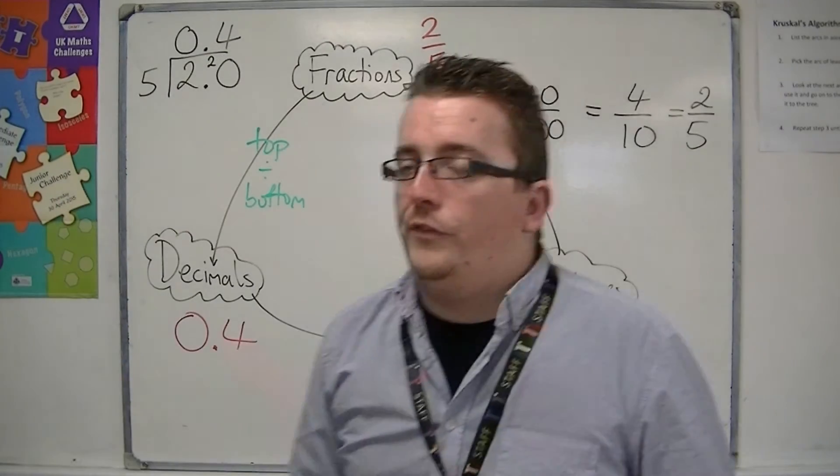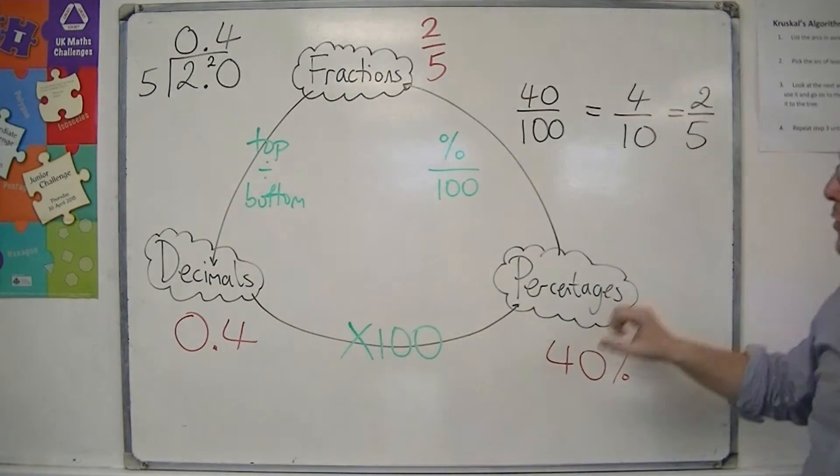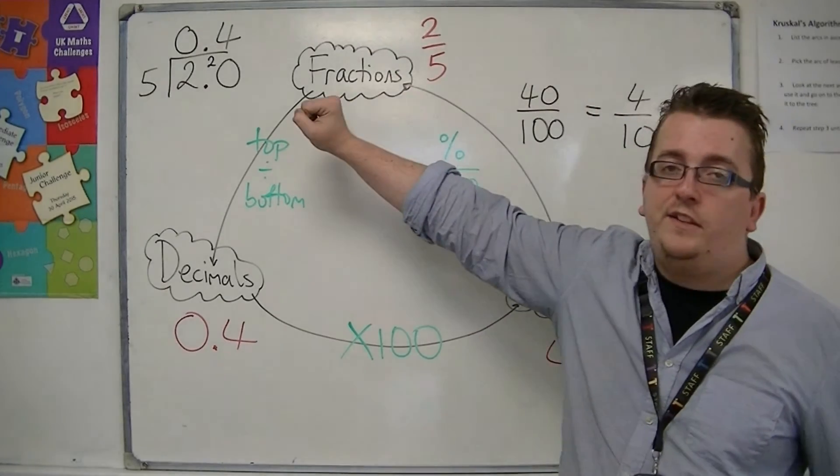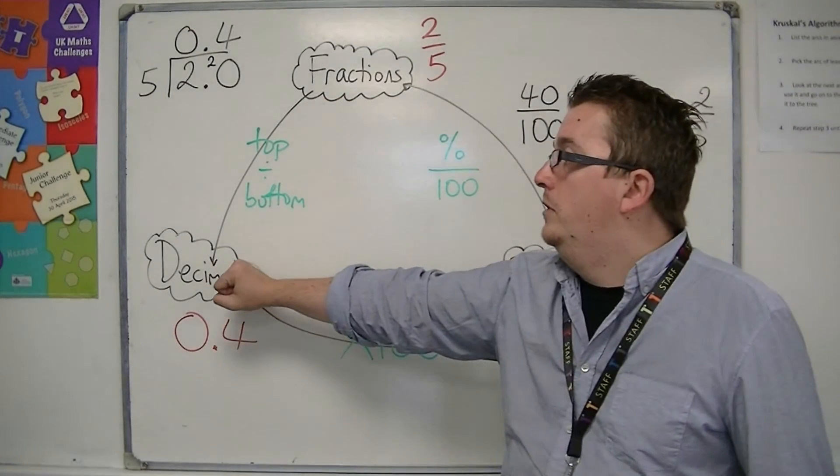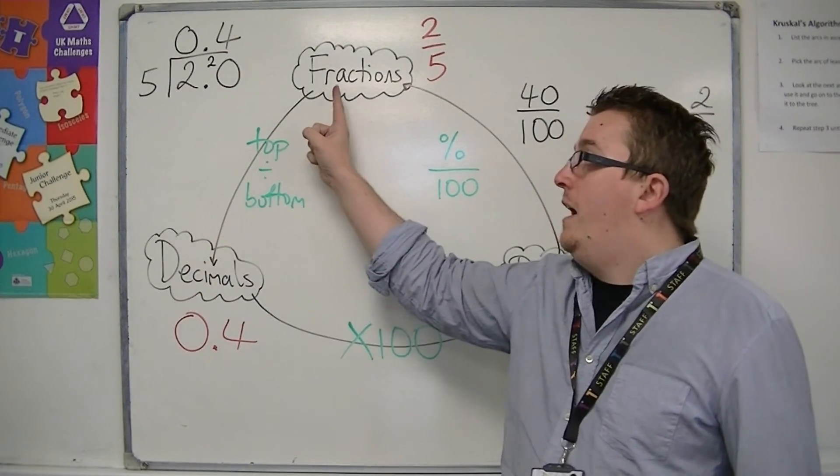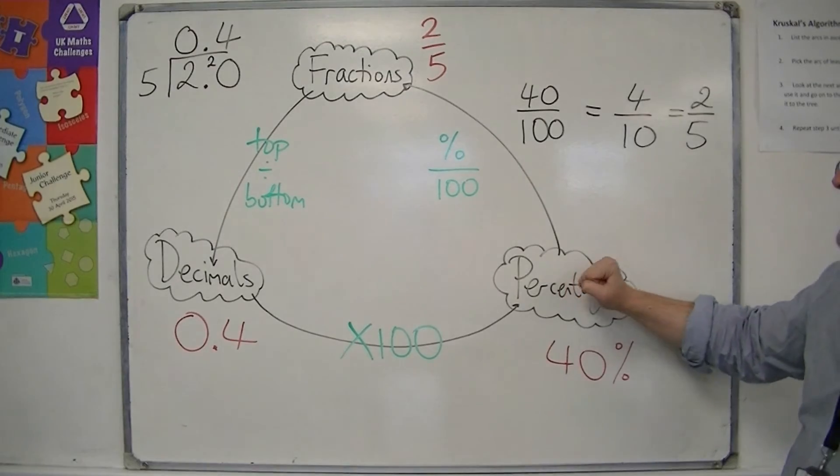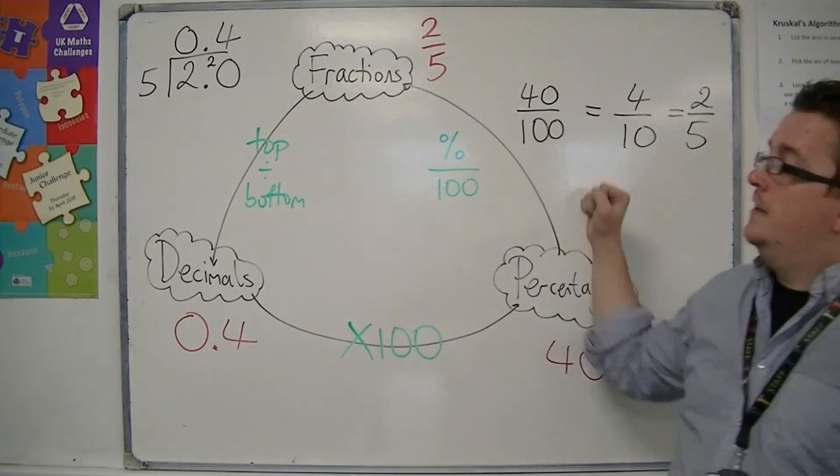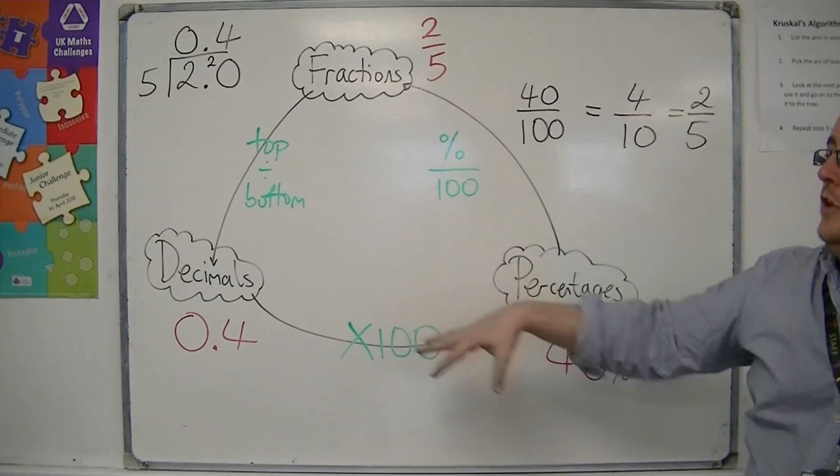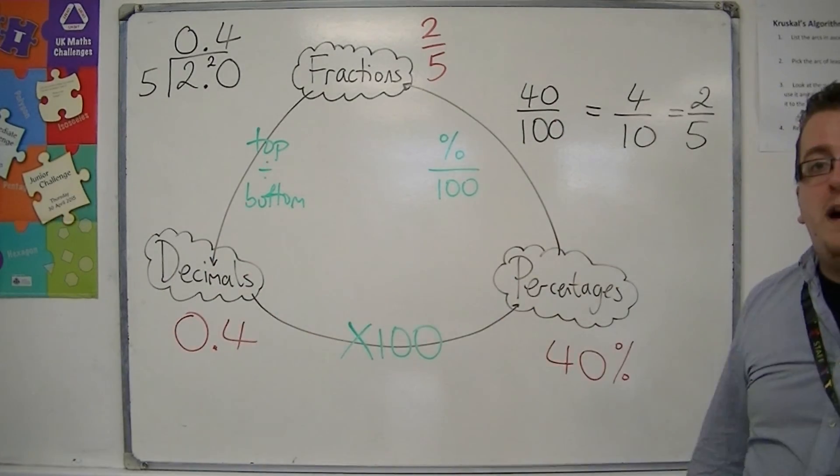So now we have a process by which we can turn a fraction into a decimal, into a percentage, and then back into the fraction. So that if you started with a decimal and you wanted to turn it into a fraction, you can turn the decimal into a percentage first, and then turn the percentage into a fraction. So this cycle allows you to turn them into whichever format you want.